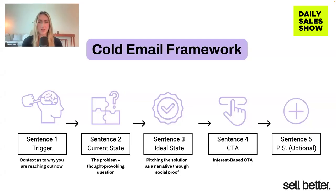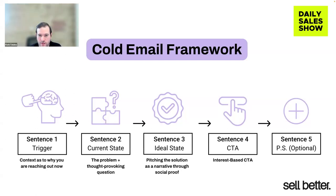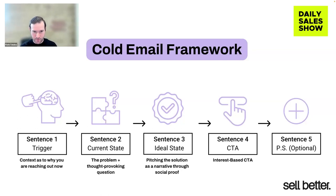I'd like to jump into cold email frameworks in general. We've alluded to a lot of these components with the subject line and the storytelling, but you gave us a really good slide here that kind of breaks down the different sentences and how to formulate those. If you could walk us through each of these briefly and how people should be thinking about them. This is the standard cold email framework that I teach in my workshops and in my course. Some of the emails I showed you earlier don't necessarily follow this specific framework to a T, but this is how I generally think about that first email in a sequence or thread.